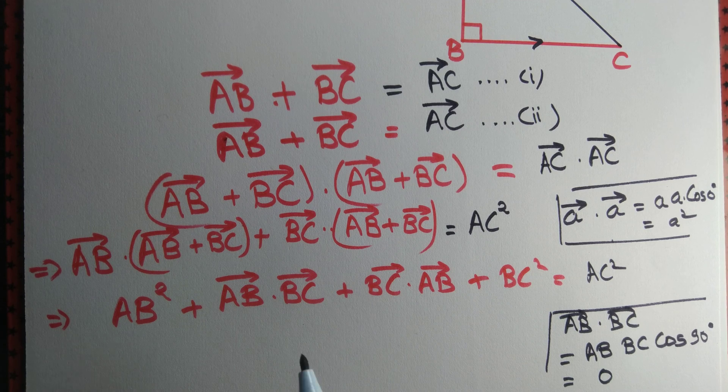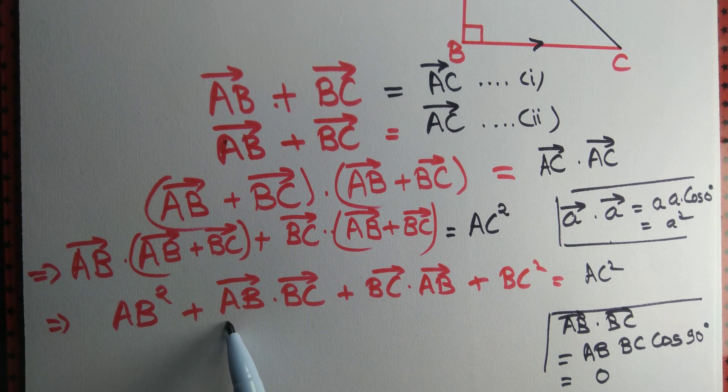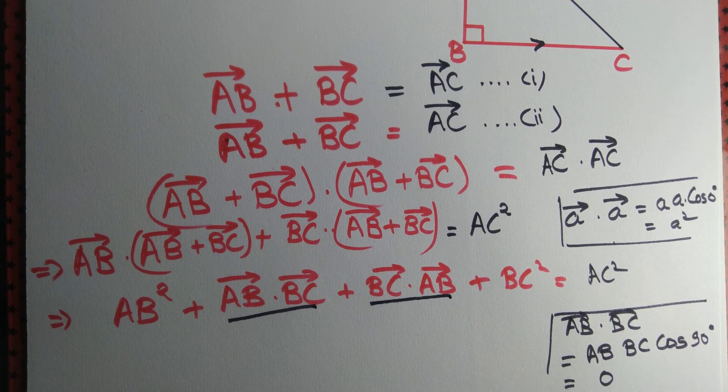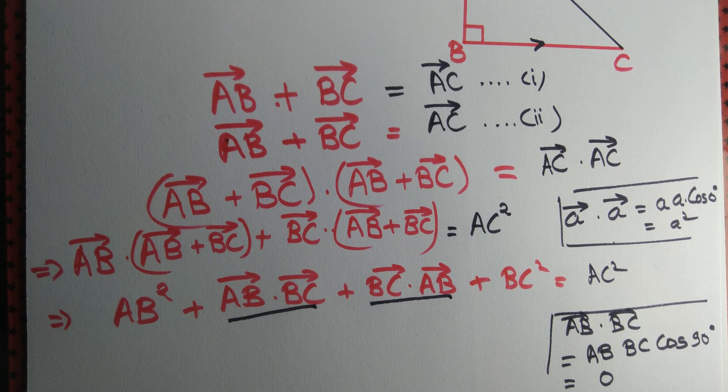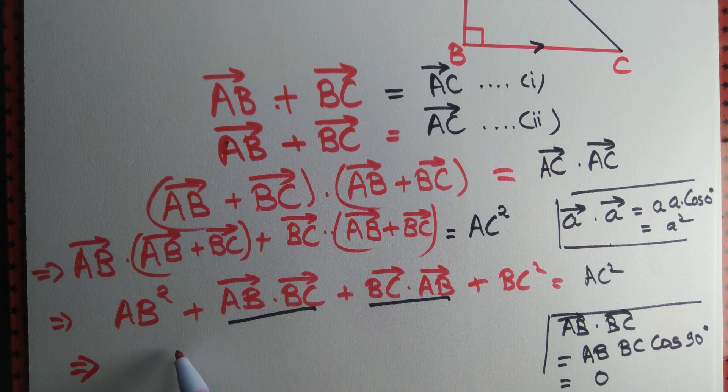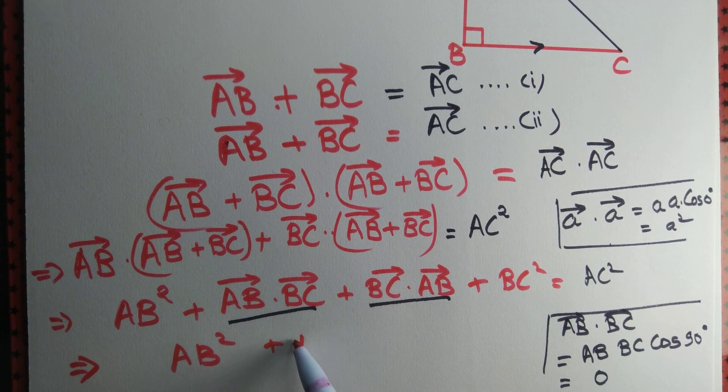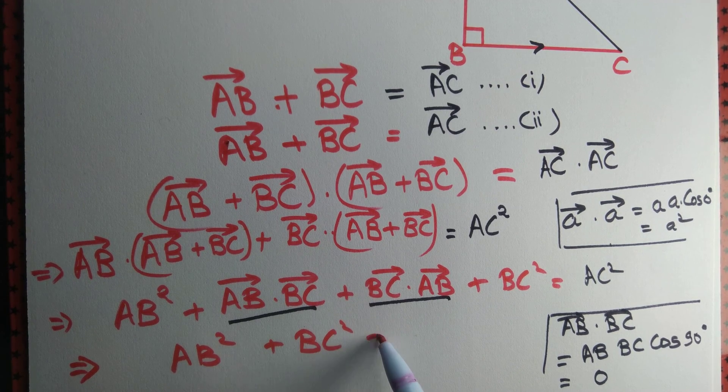So we have cos 90 degrees, and cos 90 degrees is 0, so AB dot BC is 0. So this quantity is 0. What about BC dot AB? Again angle is 90 degrees, so this is 0.